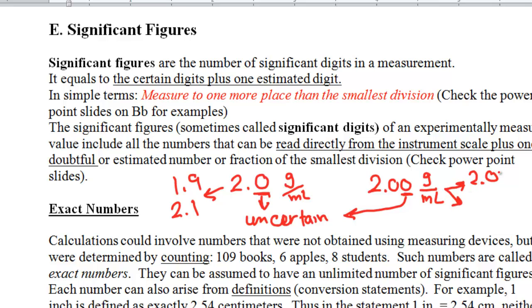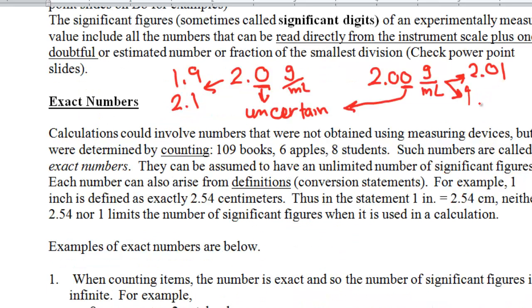With the reading of 2.00, the last zero is uncertain, so the concentration could be 1.99 or 2.01 — fluctuating by plus or minus 0.01. Although the magnitude is the same, 2.00 with two decimal places is more precise than 2.0 with one decimal place. The last digit to the right is always the uncertain or estimated digit.